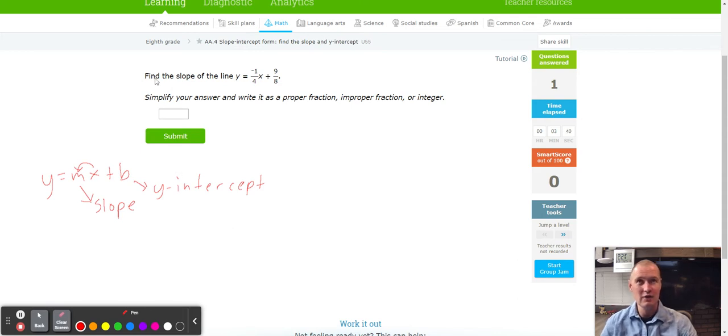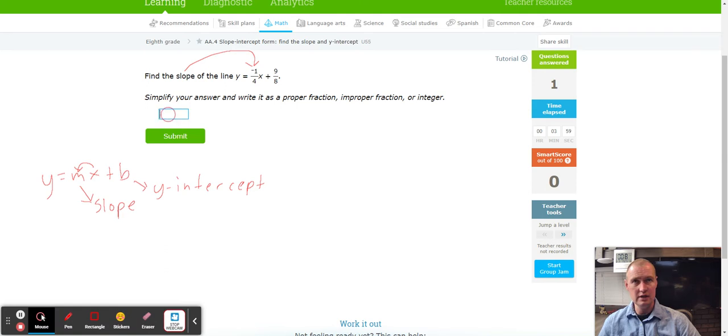Here we go, let's give this one a try. Find the slope of the line y equals negative one over four x plus nine over eight. Because they're looking for the slope, remember the slope is the value right before the x. In this case it is a negative fraction so we're going to include the entire negative fraction, so let's go ahead and put in negative one over four.